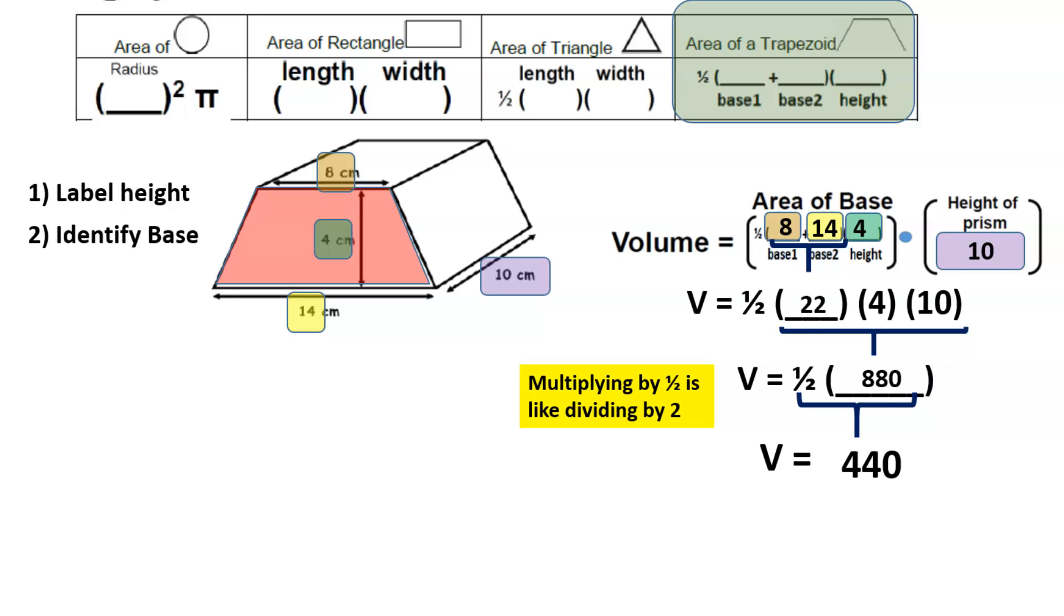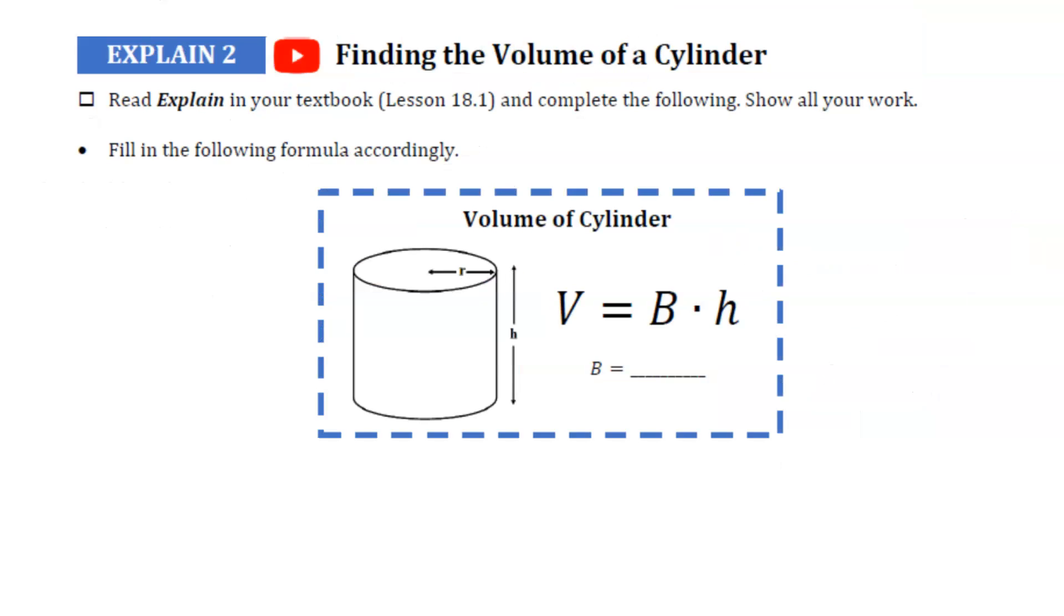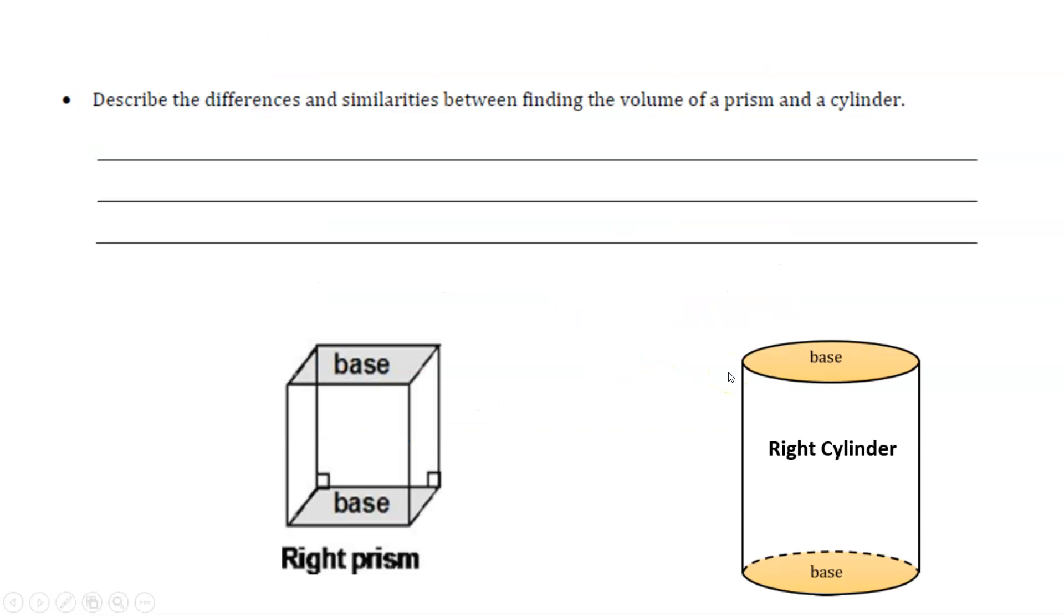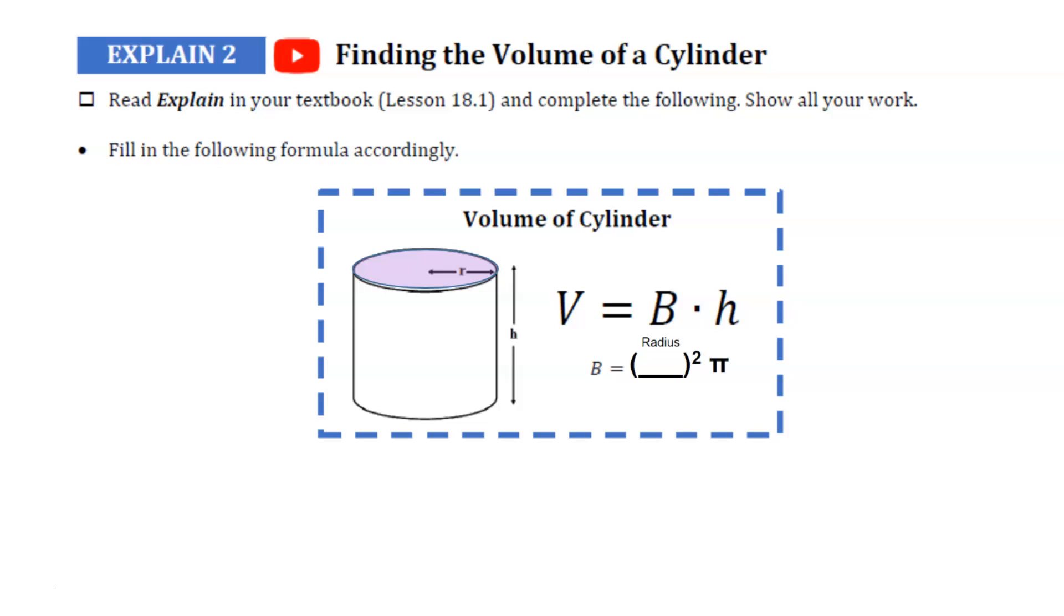If at any point I'm going too fast, please pause at any moment. Explain 2, we're going to go over the volume of a cylinder. Notice here, it's very similar to what we've been finding. The only difference is we're going to have a circle as our base. That means the area formula for our base is going to be radius squared times pi. That is pi, and we can use an estimate for that as 3.14.